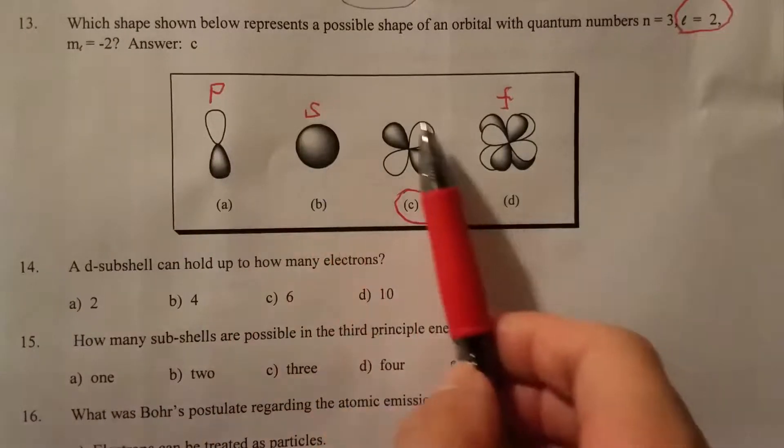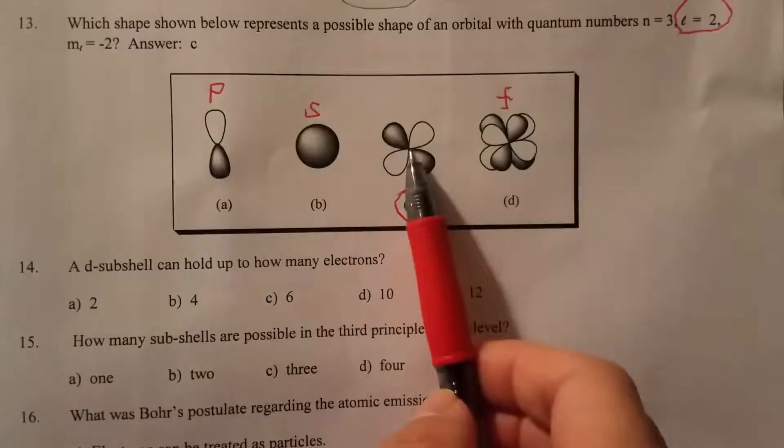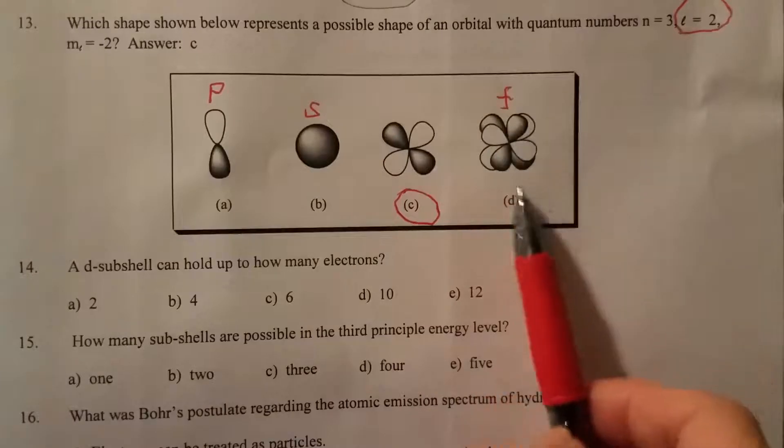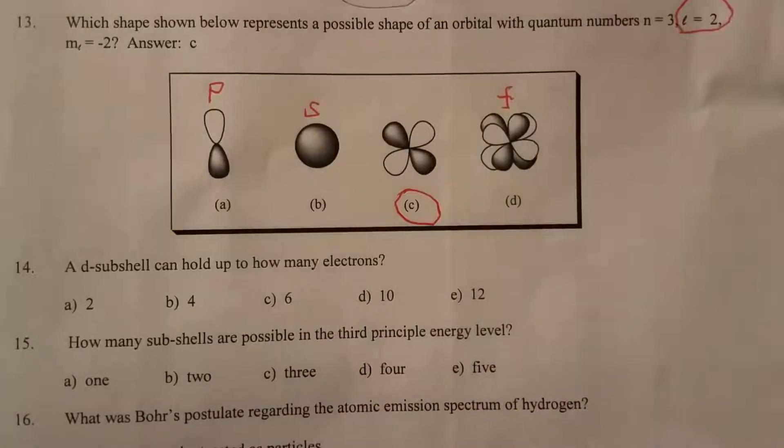This is the s orbital. And this is actually one of the 5 d orbitals. And this is one of the 7 f orbitals. Now that's question number 13.